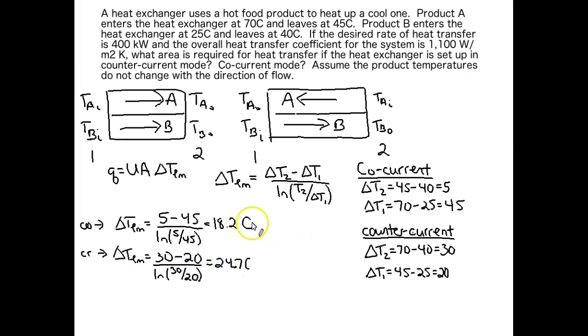Let's calculate that delta T log mean for both our co-current and our counter current types. Okay, we can see that for co-current, we have a smaller log mean temperature difference than for counter current. And if we want to transfer the same amount of heat, we're going to need different area for each one. So let's work out what that area is equal.